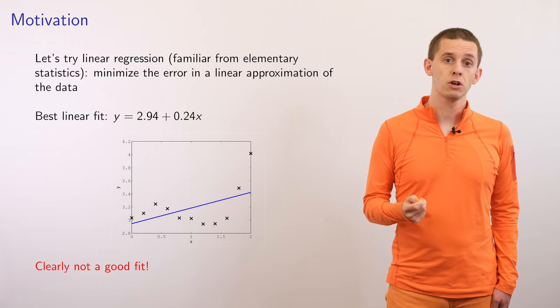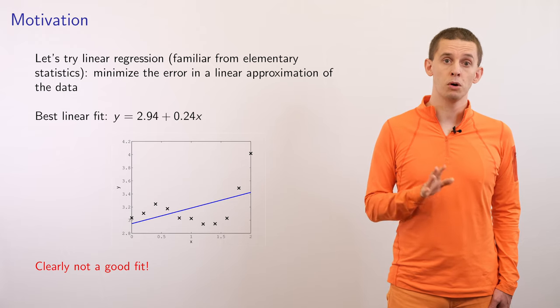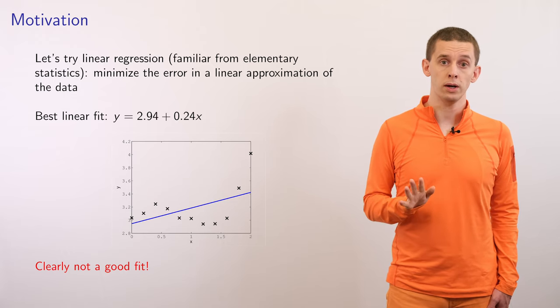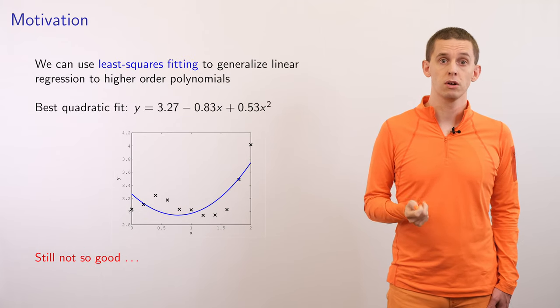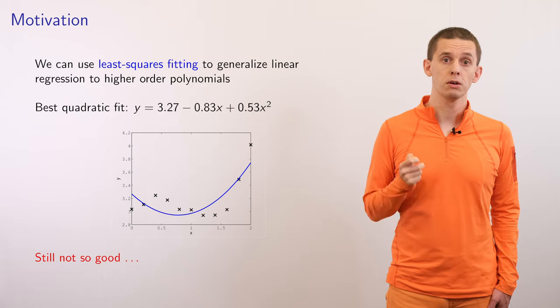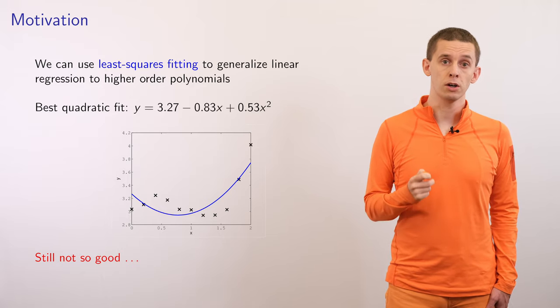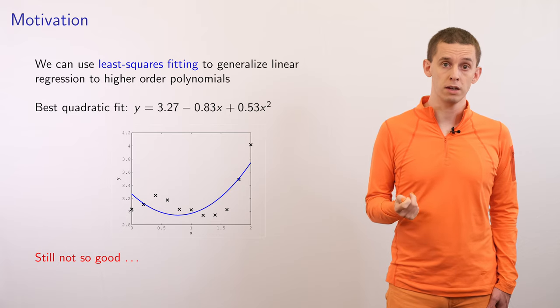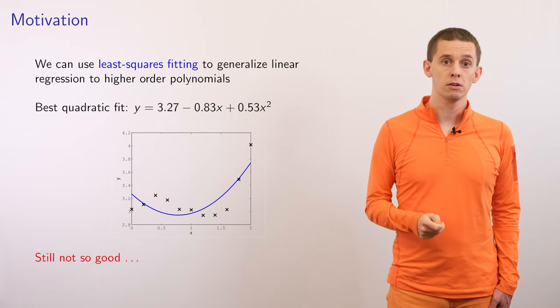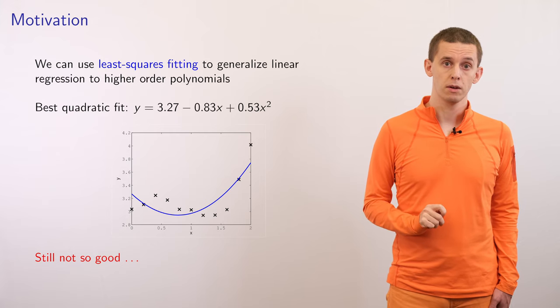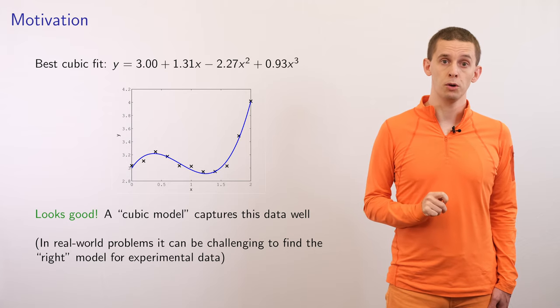In this unit, we're actually going to show that linear regression is one member of a broader class of least squares fitting methods. We'll show how we can generalize this approach to fit higher order polynomials. Here, I'm first going to try fitting a quadratic polynomial through the data. This seems to do a little better, although it's still not that good of a fit to the data set. Now let's go to a cubic polynomial.